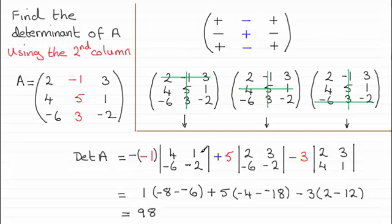We multiply those with the corresponding determinant. So for minus 1, you can see it's 4, 1, minus 6, minus 2, as we've got there.